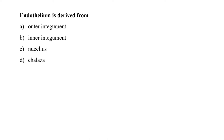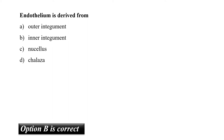The next question is: endothelium is derived from? The correct option is B, that is inner integument. This is because the endothelium is an additional layer differentiating from the inner epidermis of the ovule integument.